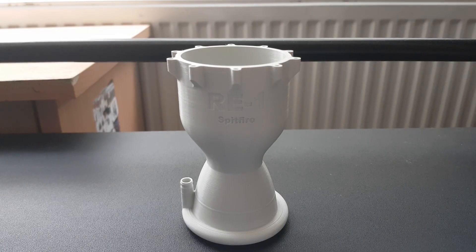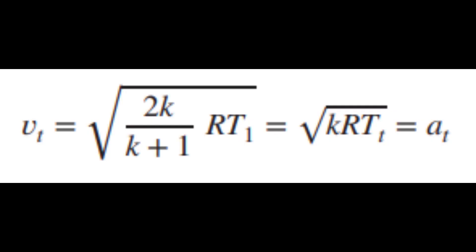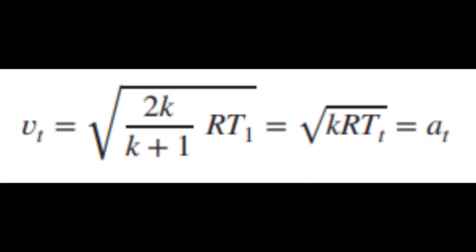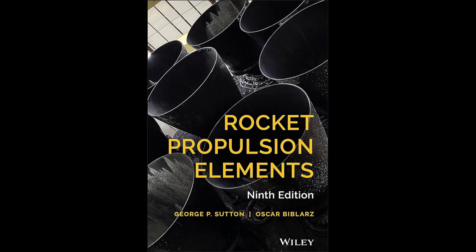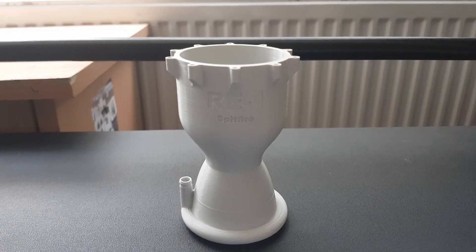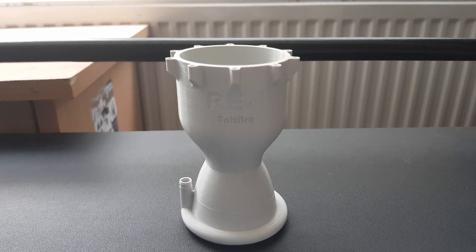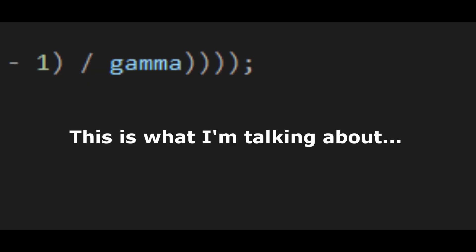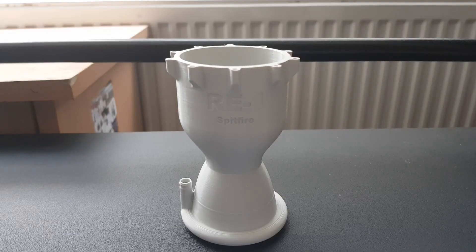The next thing I had to do was implement the equations required to calculate the variables mentioned before. I got those equations from a book called Rocket Propulsion Elements. This was by far the hardest part of writing the program, because there were so many equations and so many parentheses that at some point I actually forgot where to put the next parentheses.